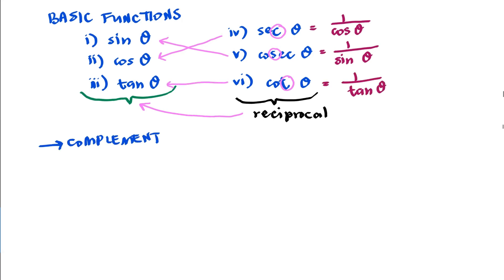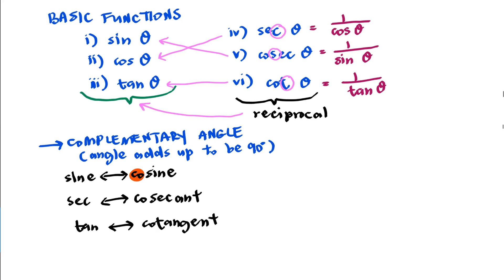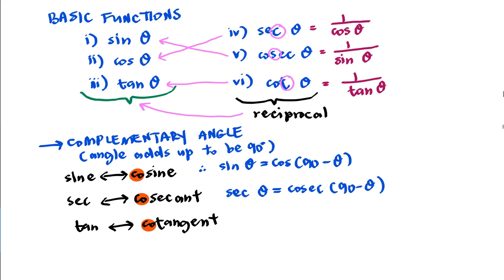We also learned about complementary angles — angles that add up to 90 degrees. To know which function is the complement, look for the prefix 'co': sine pairs with cosine, secant with cosecant, and tangent with cotangent. So sine theta equals cosine of (90 minus theta), secant theta equals cosecant of (90 minus theta), and tangent theta equals cotangent of (90 minus theta).